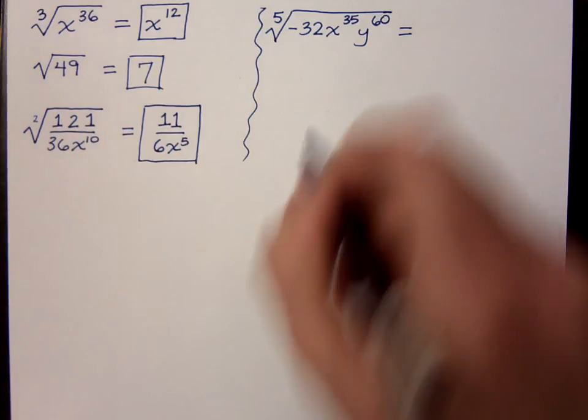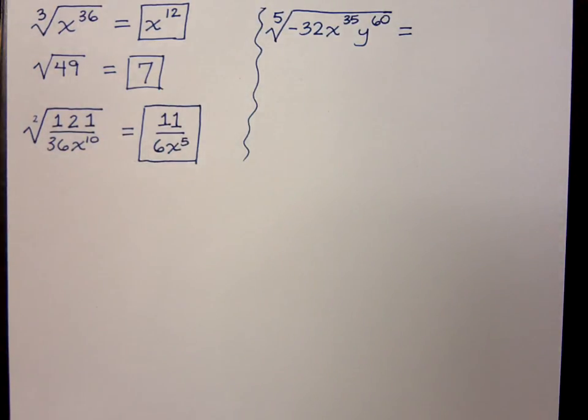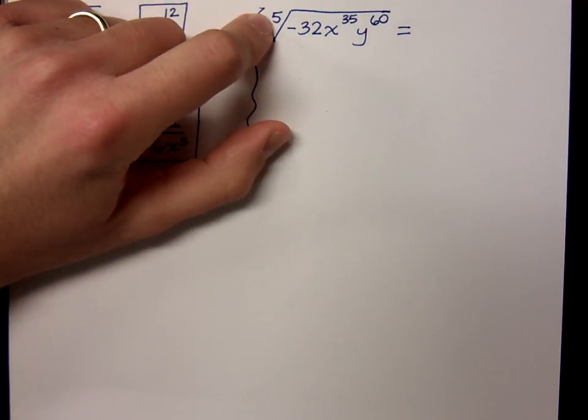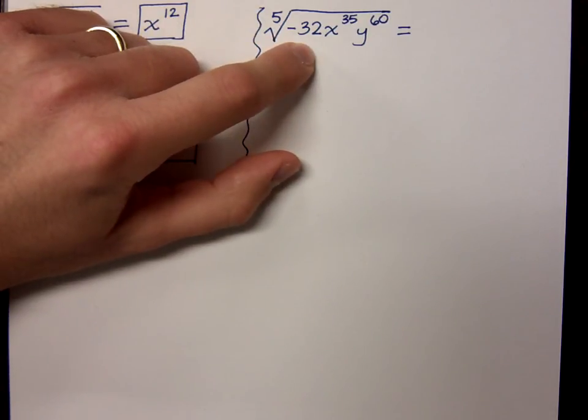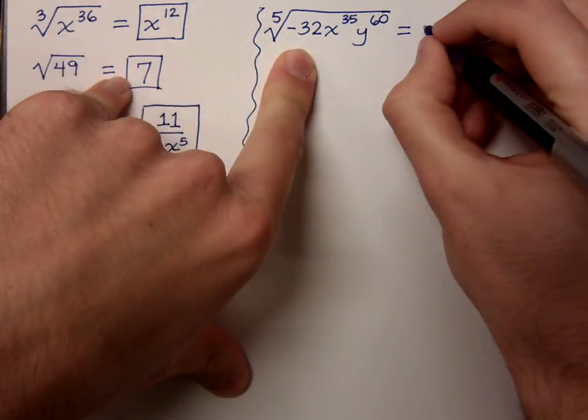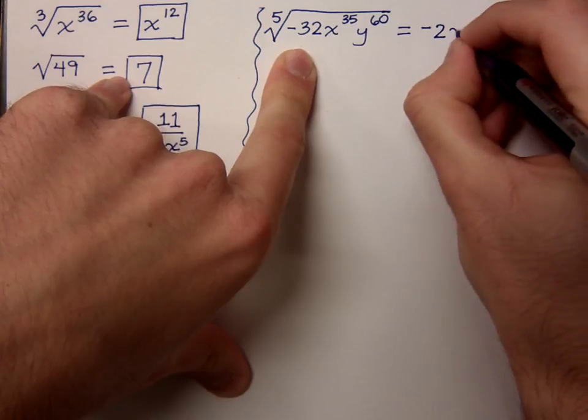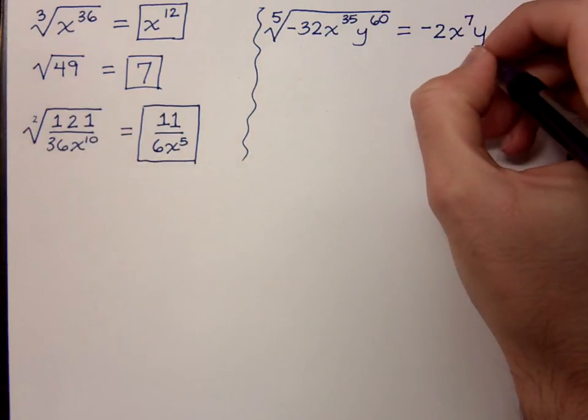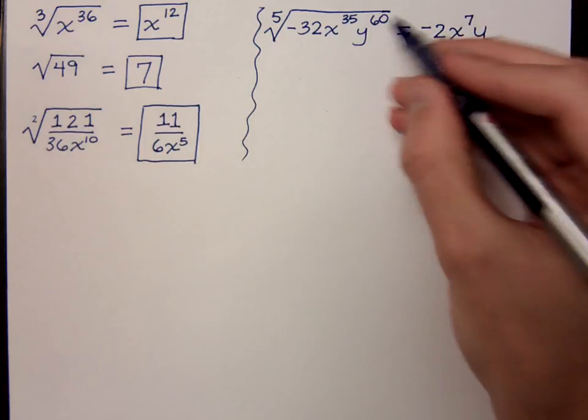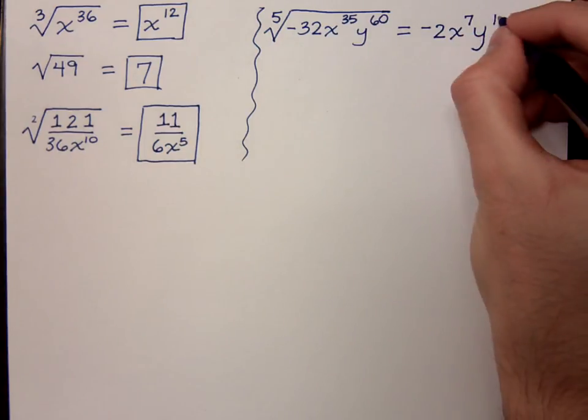Now, what's the 5th root of negative 32? Or are you going to tell me it's impossible because it's a negative number? Since this is an odd index, we can have anything we want to inside here, even if it's a negative. The only time we have issues with a negative radicand is when that's inside of what kind of radical? Even. An even indexed radical. So what's the 5th root of negative 32? Negative 2. And what about the x? x to the 7th and y to the 8th. x to the 7th. And how did you get y to the 8th? We've got 60 divided by 5, and we end up with 12, right?